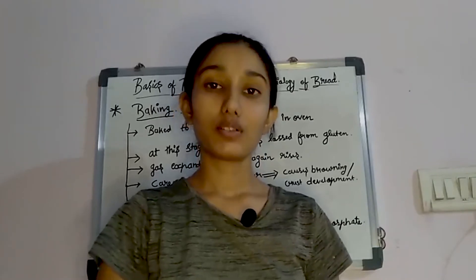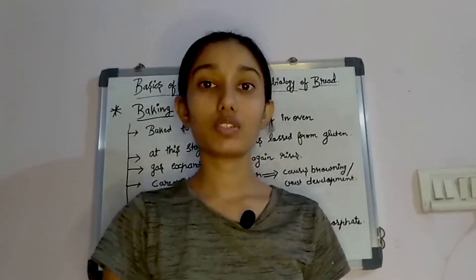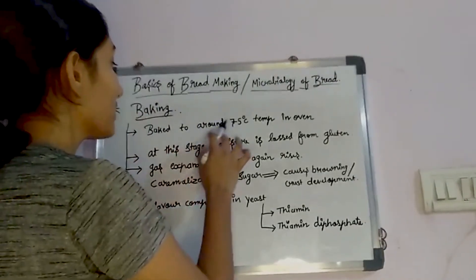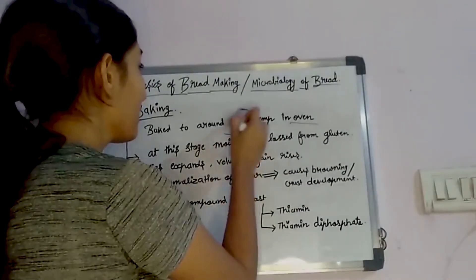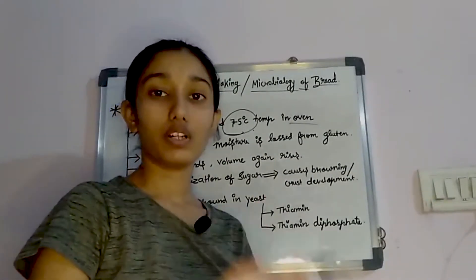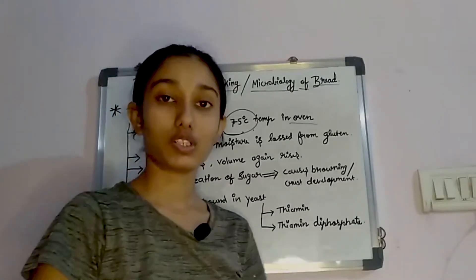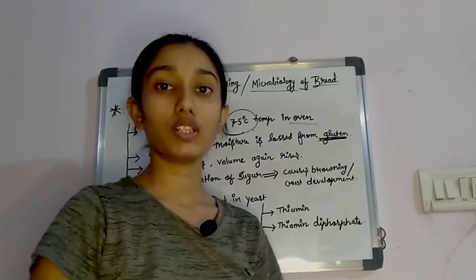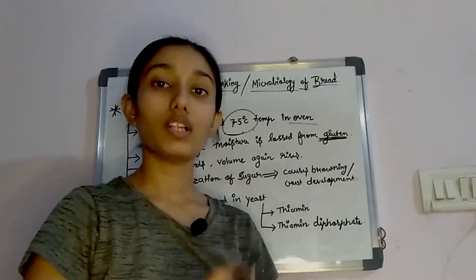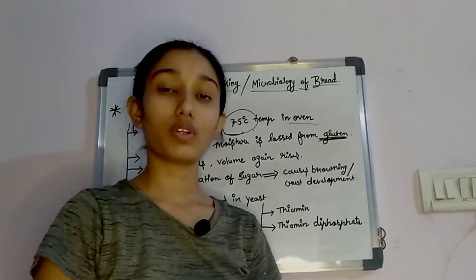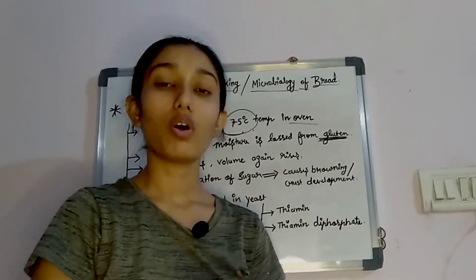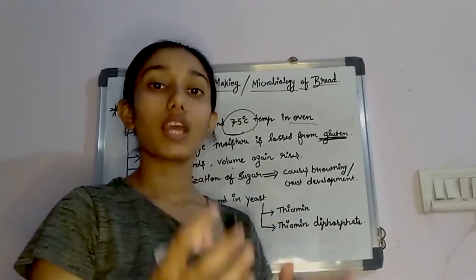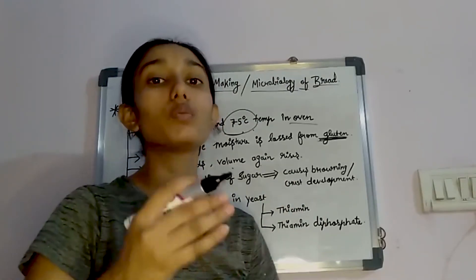The last and most important stage is baking. The dough is baked at around 75 to 100 degrees Celsius in the oven. At this stage, moisture is lost from the gluten — the protein is present but moisture is released, so the final bread product is in dry form, while the dough had a lot of moisture. The gas expands and volume rises again during baking.